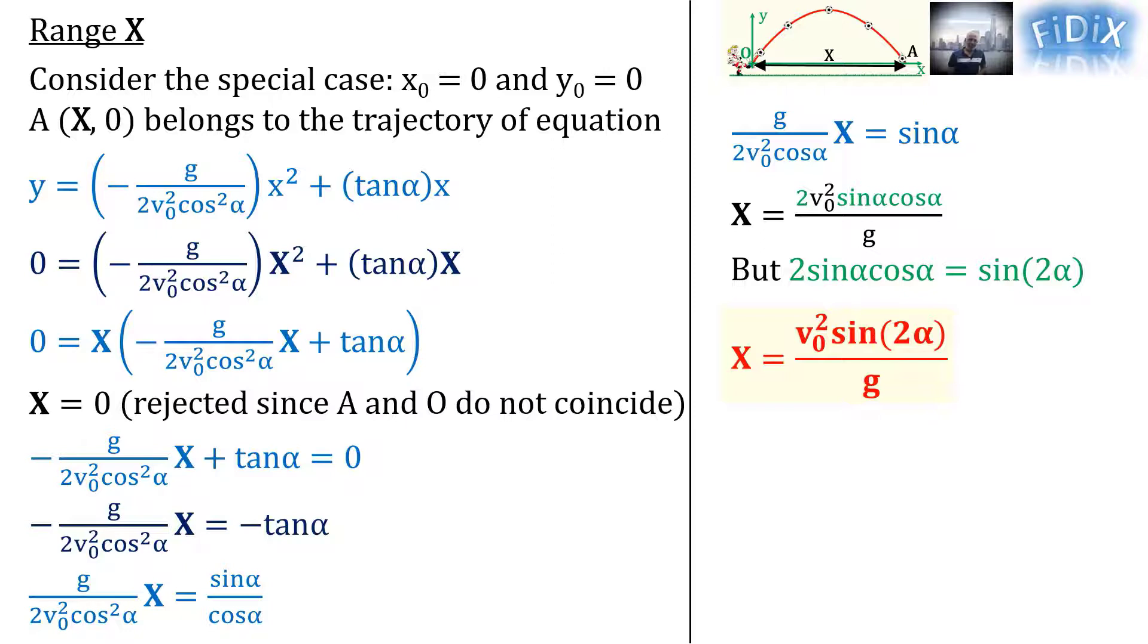Note that based on this formula, the range is maximum when sin(2α) is equal to one, which means that 2α is equal to 90 degrees. This leads to α equals 45 degrees. This result means that to get the maximum range, the launch angle must be 45 degrees.